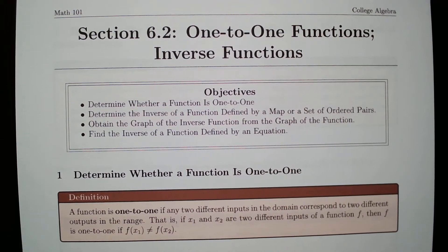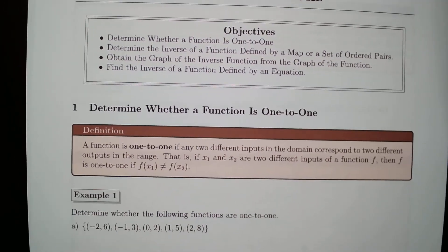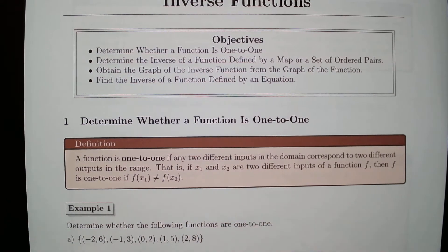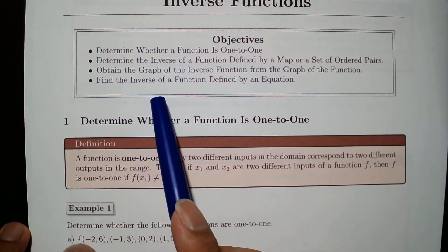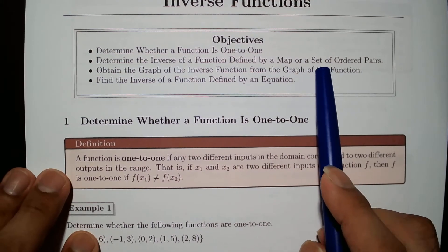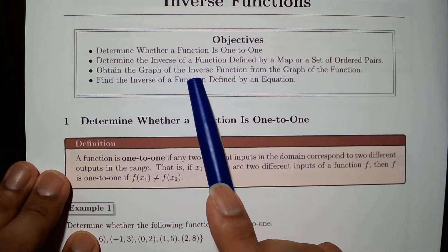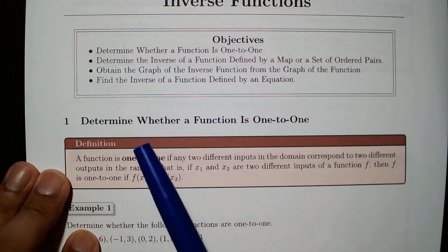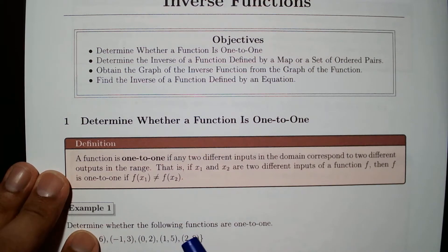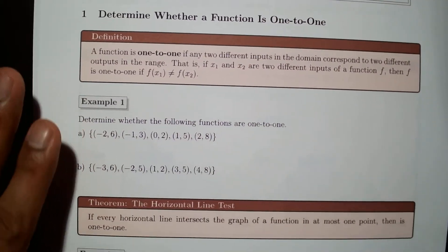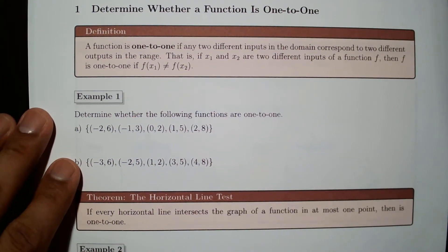In this video we go over section 6.2, one-to-one functions and inverse functions. In this section we will determine whether a function is one-to-one, find the inverse of a function defined by a map or a set of ordered pairs, obtain graphs of inverse functions from a graph of a given function, and find the inverse of a function defined by an equation.